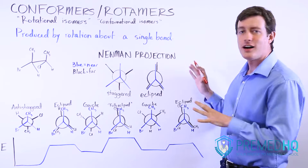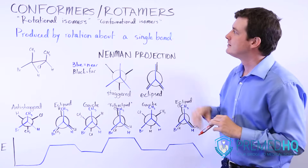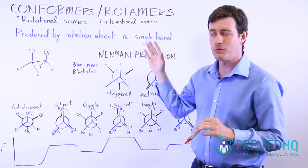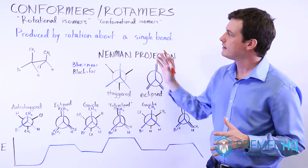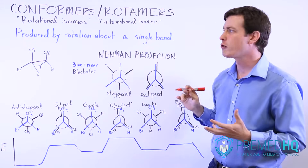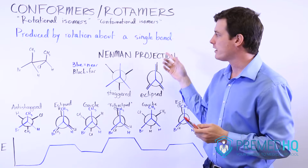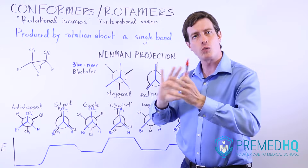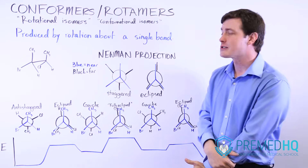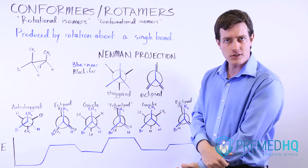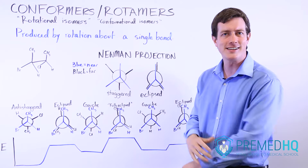One topic that relates to isomers, but is somewhat debated whether or not these are actually isomers of each other, is conformers and rotamers. You might hear them referred to as conformational isomers or rotational isomers. These are different forms of a compound or molecule created by the fact that sigma bonds can rotate. As different groups rotate around a single bond, you'll have slightly different structures based on where the different groups are in relation to each other. Some say that they are diastereomers, others say they're not true isomers because they're the exact same compound, just slightly twisted differently at a different point in time.